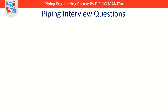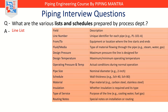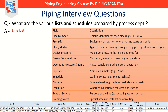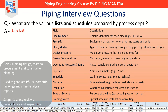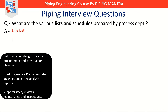Now that we know the main diagrams, the next question is: what are the various lists and schedules prepared by the process department? Lists might not sound exciting, but they are the backbone of process engineering coordination. First is the Line List — this is like a master register for every single pipeline in the plant. It includes line numbers, sizes, specifications, operating conditions, design conditions, test pressures, painting requirements, and coating details. It helps with piping design, procurement, and construction planning, and supports safety reviews, maintenance, and inspections.